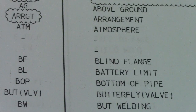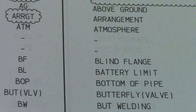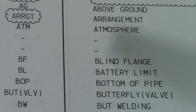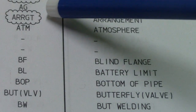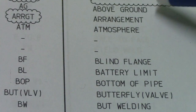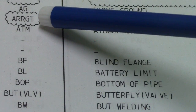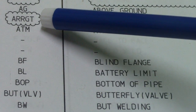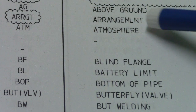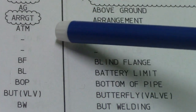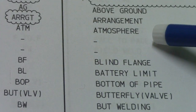Hi guys, welcome back to Piping Welding and NDT channel. So this is piping abbreviation. We start it: AG means above-ground, ARRGT is arrangement, ATM is atmosphere.